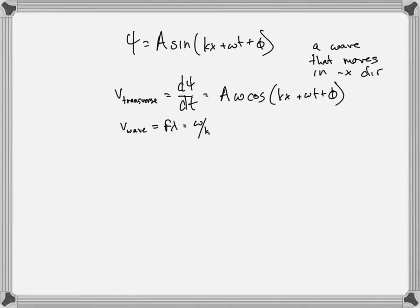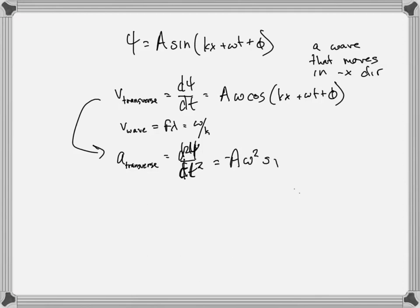There's also the transverse acceleration. Remember, the up-down motion of any point on the wave is just like simple harmonic motion. The transverse acceleration is d²ψ/dt². For the wave moving in the minus x direction, that equals minus A·ω² times sine(kx plus ωt plus φ). The transverse velocity and wave velocity are different: the wave moves along x at the wave velocity, while any point on the wave moves up and down at the transverse velocity.